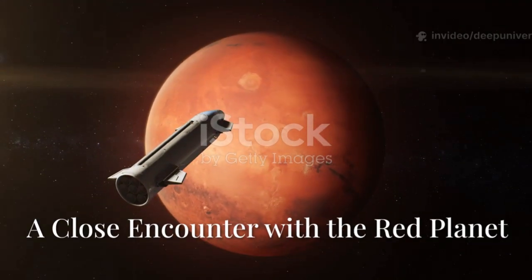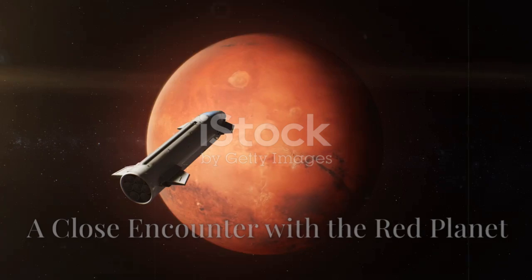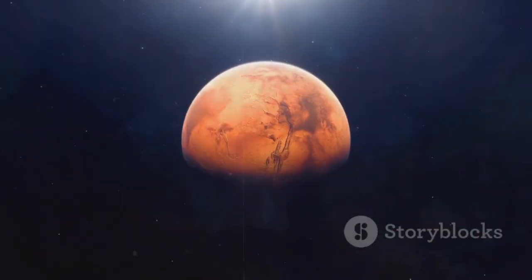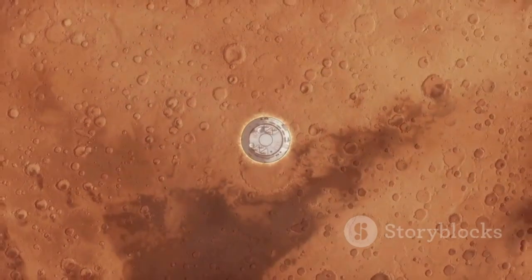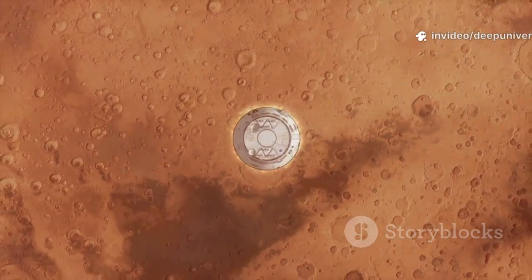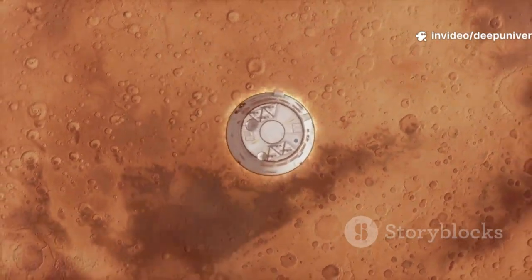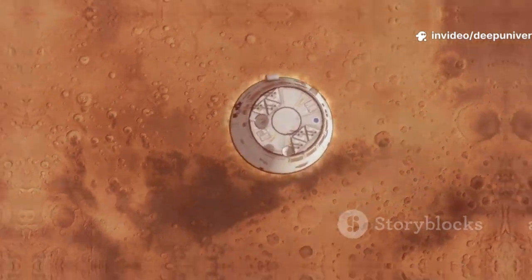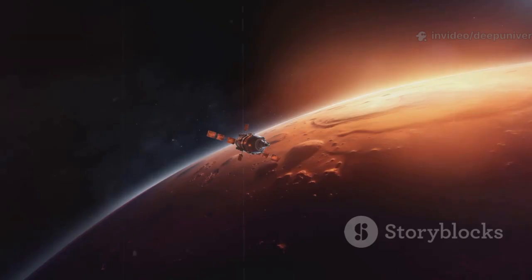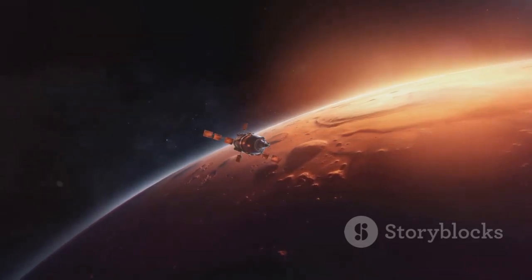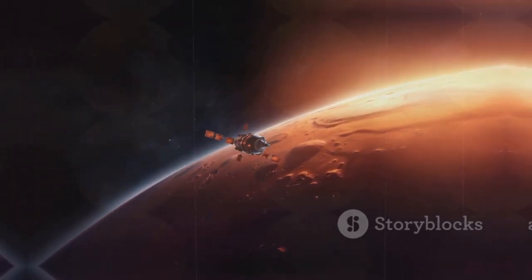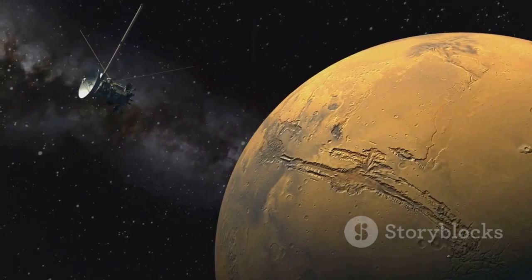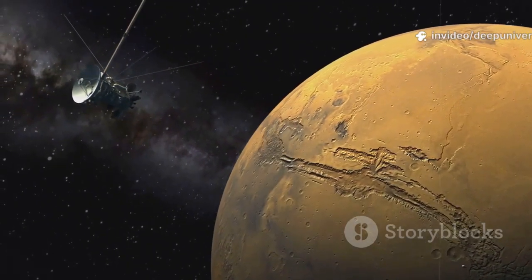The story of 3i Atlas is just beginning. In October 2025, 3i Atlas made a close pass by Mars, about 30 million kilometers away. This rare alignment allowed ESA's ExoMars Trace Gas Orbiter and Mars Express to turn their instruments toward the comet. These orbiters, usually focused on Mars, became our front row observers for this interstellar visitor. NASA's Psyche spacecraft also joined the effort, making it a global collaboration.